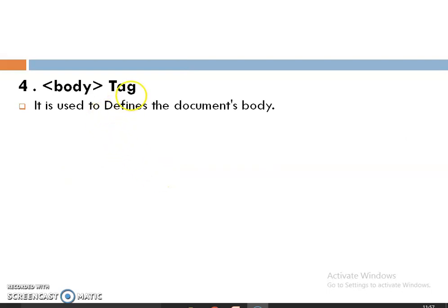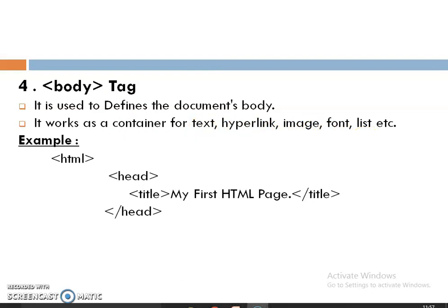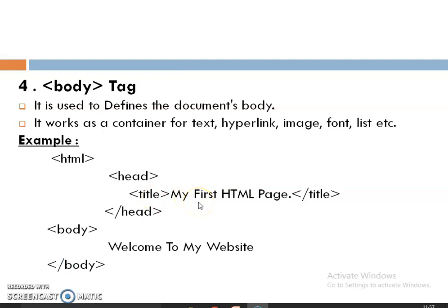The Body tag is used to define a document's body — all remaining tags are written within the body tag. It works as a container for text, hyperlinks, images, font, HTML lists, etc. For example, starting with the HTML tag, specifying the heading with a title 'My First HTML', then the body tag with the text message 'Welcome to my website', and finally closing the HTML tag.